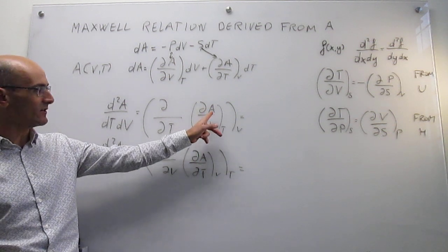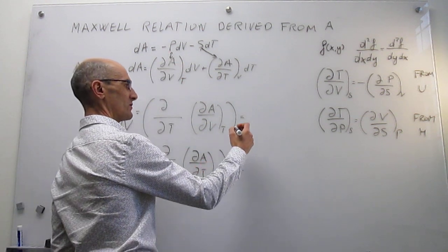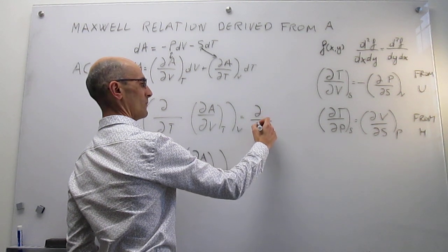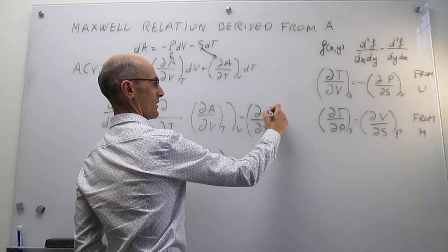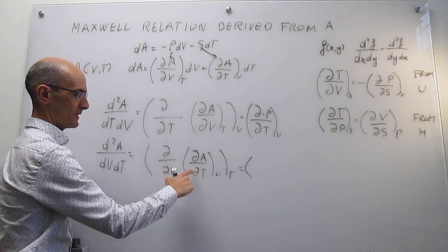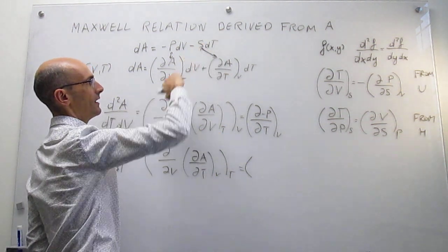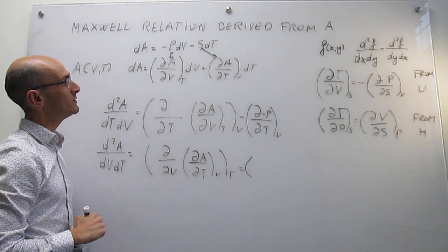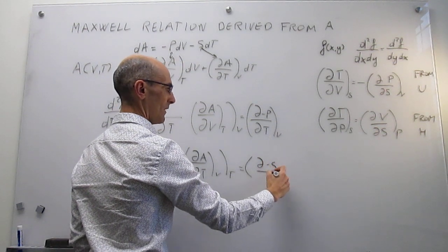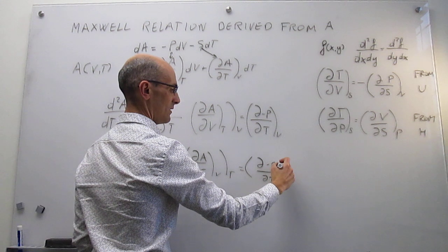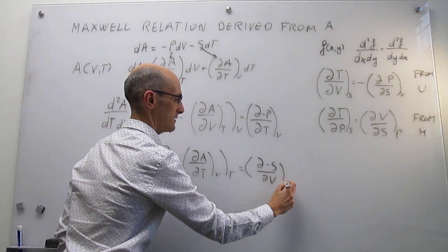The first derivative of the Helmholtz energy with respect to volume at constant temperature is identified from the fundamental equation as minus pressure. And the first derivative of the Helmholtz energy with respect to temperature at constant volume is identified as minus entropy. So along the first path we get the derivative of minus pressure with respect to temperature, and along the second path the derivative of minus entropy with respect to volume at constant temperature.